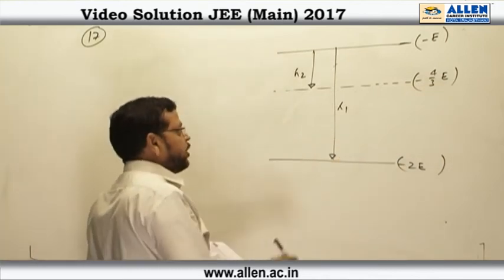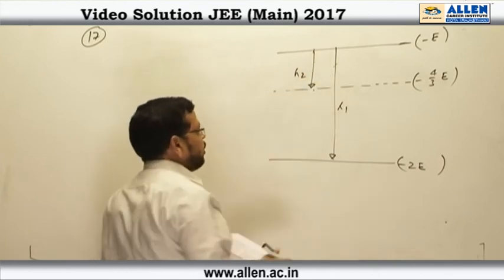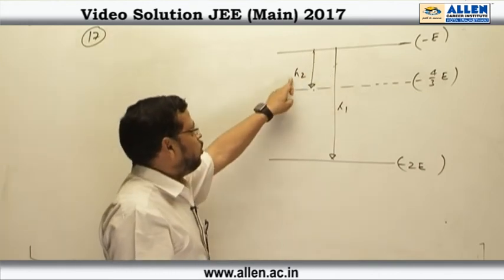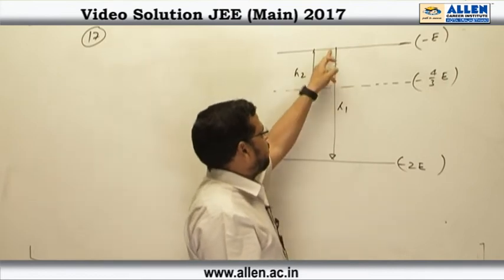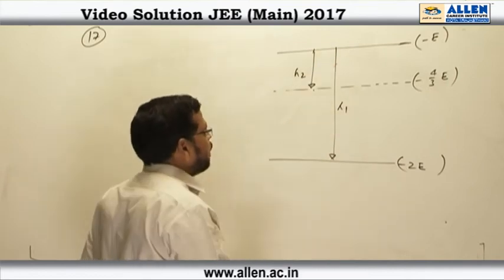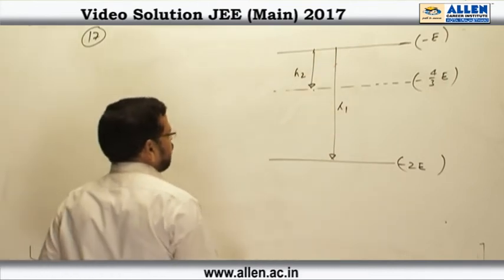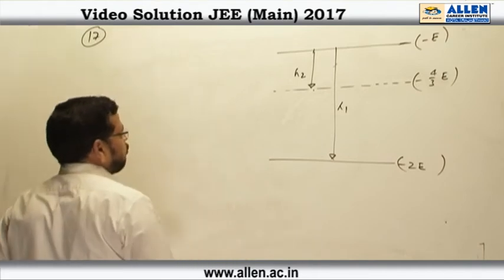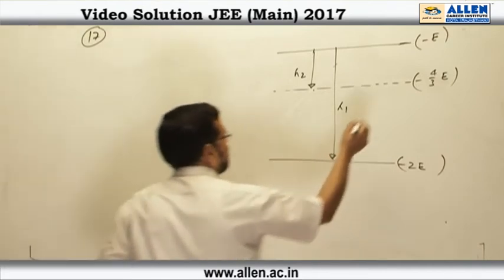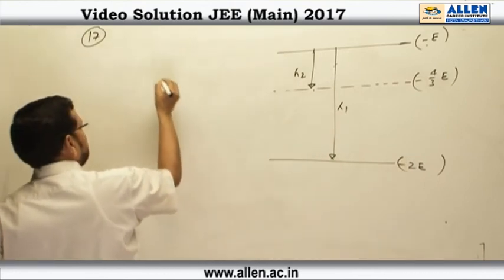According to the question when a transition takes place between these two levels, the wavelength of radiation emitted is lambda 2 and when a transition takes place between these two levels, the radiation the wavelength of radiation emitted is lambda 1. Now, the energy level difference between these two levels is going to be e.